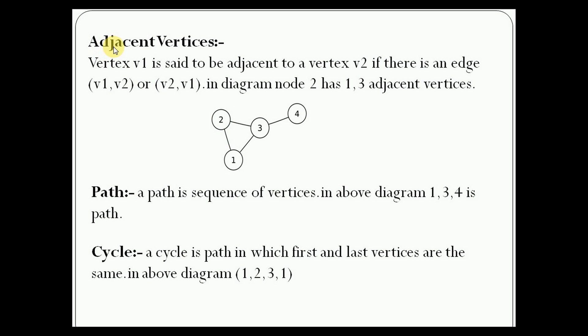Vertex V1 is said to be adjacent to V2 if there is an edge V1,V2 or V2,V1. In the diagram, node 2 has two adjacent vertices, 1 and 3. This is called adjacent vertices if there is an edge between two vertices.